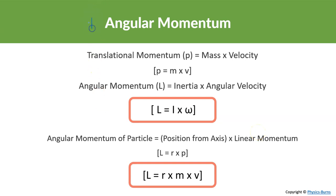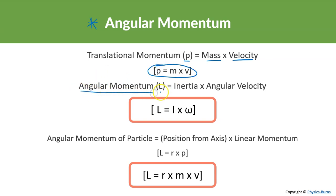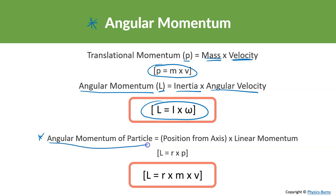Welcome back to the last topic of rotational motion: angular momentum. For translational motion, momentum is p = mv. For angular momentum, represented by capital L, instead of mass we use the rotational inertia, and instead of velocity we use angular velocity, so L = Iω. The angular momentum of a particle also depends on how far it is from the axis.